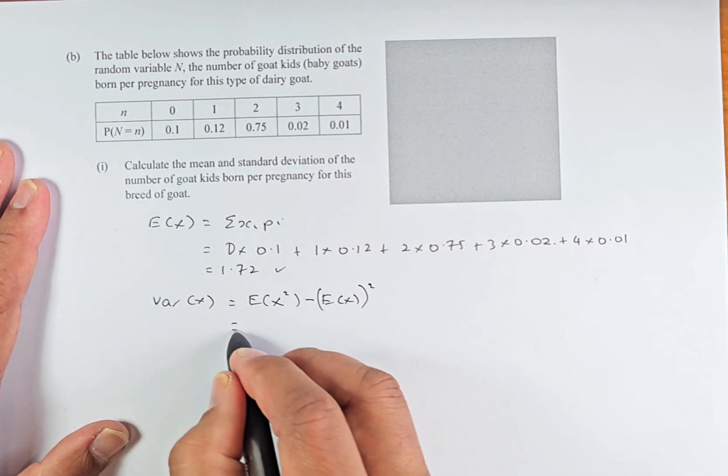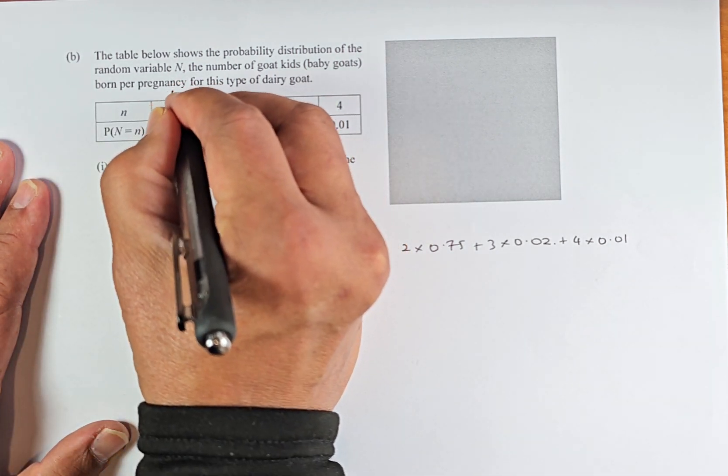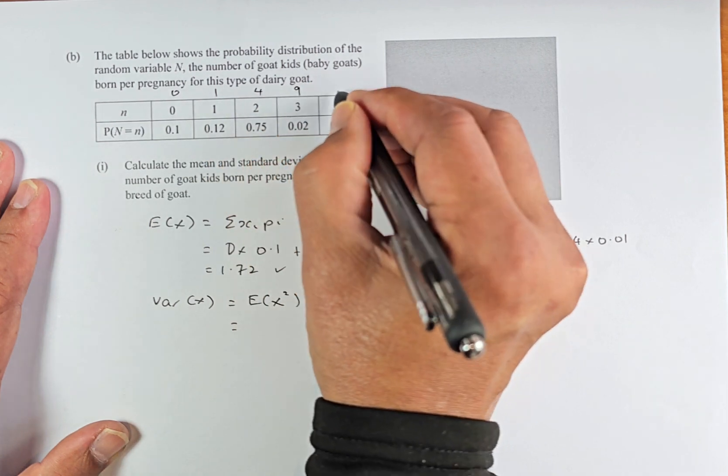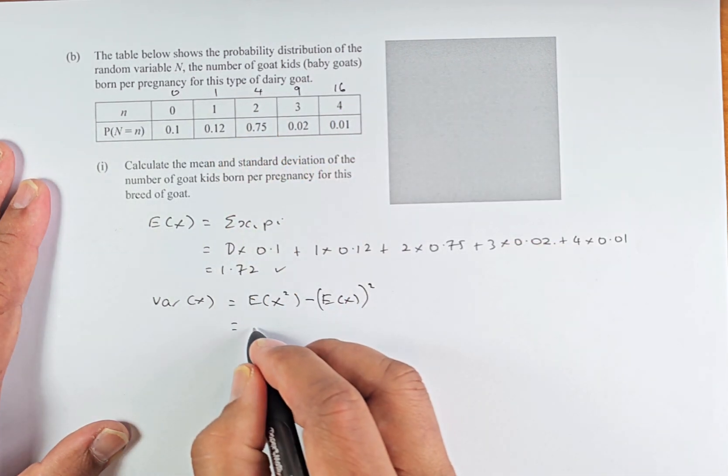To get e x squared, we're just going to square the number. So 0 squared is 0, 1 squared is 1, 2 squared is 4, 3 squared is 9 and 4 squared is 16. So the same thing we're going to calculate.